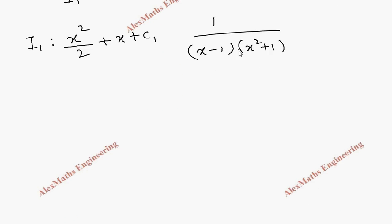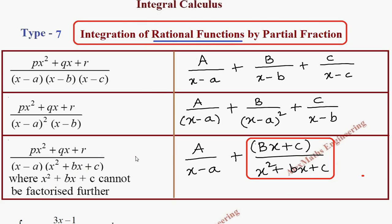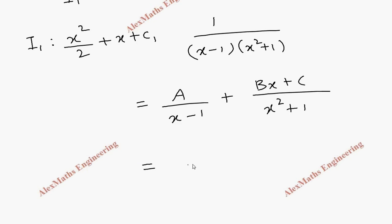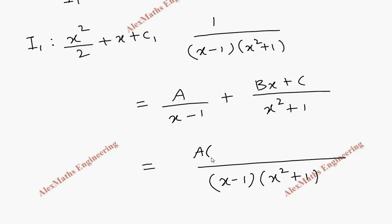We have a non-factorizable quadratic expression x squared plus 1. As already discussed, when we have a non-factorizable quadratic expression we use the form Bx plus C. So it will become A over x minus 1 plus Bx plus C over x squared plus 1. Taking LCM as x minus 1 times x squared plus 1, we get A times x squared plus 1 plus Bx plus C times x minus 1 in the numerator.